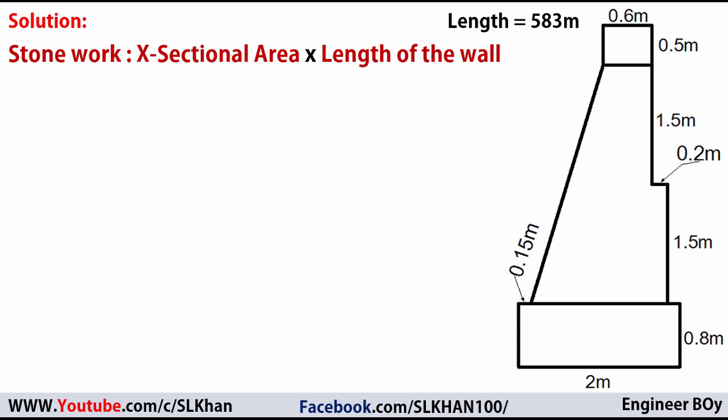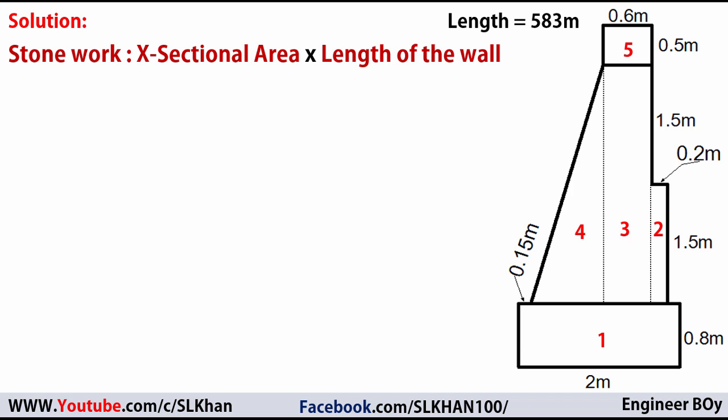We can split the diagram into simple geometric shapes in order to calculate its total cross-sectional area. I'm going to do that by drawing two vertical lines to get five geometric shapes. Then I can calculate the area of each and add them together to get the total cross-sectional area.